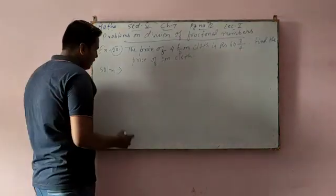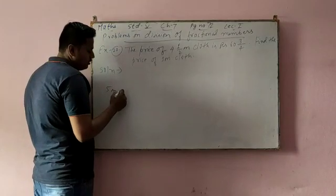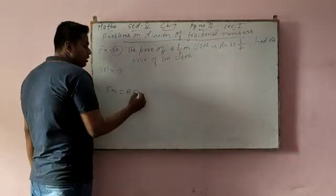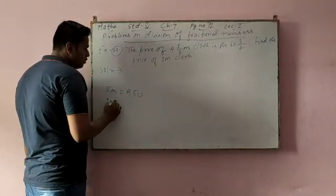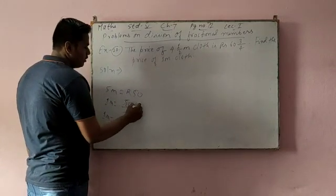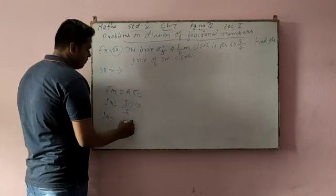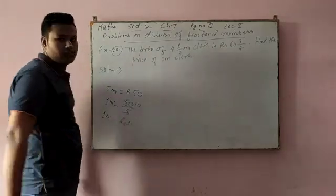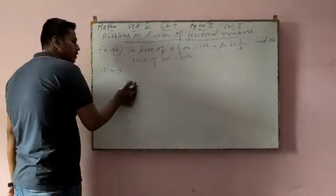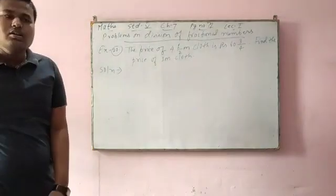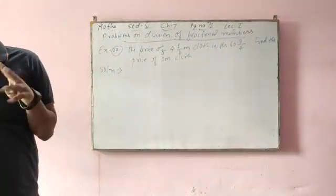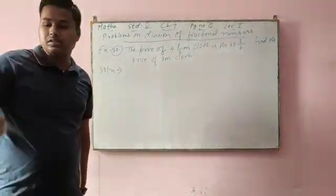In easy way, I can say like, 5 meter cloth cost is rupees 50, and you have to find the cost of 1 meter cloth. So what you will do? You will divide 50 by 5. So 1 meter cloth cost will be 10. But here it is in fractional number. So whenever the question is find the cost of 1 meter cloth or find the cost of each, you have to go for division.